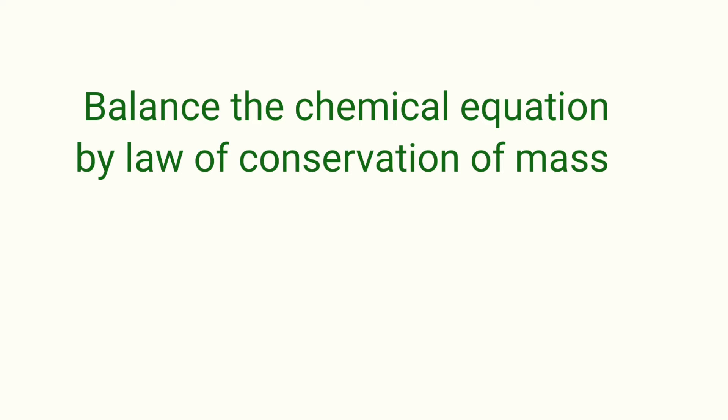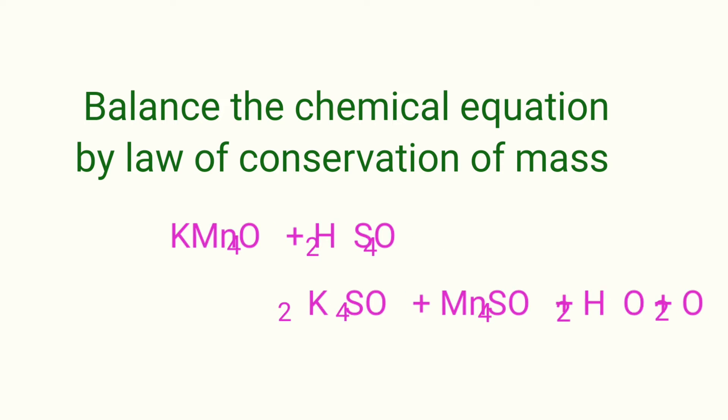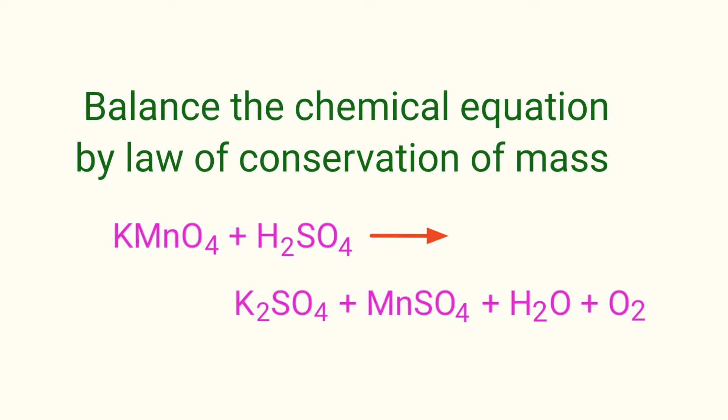Balance the chemical equation by the Law of Conservation of Mass. Potassium Permanganate plus Sulfuric Acid gives us Potassium Sulphate plus Manganese Sulphate plus Water plus Oxygen.